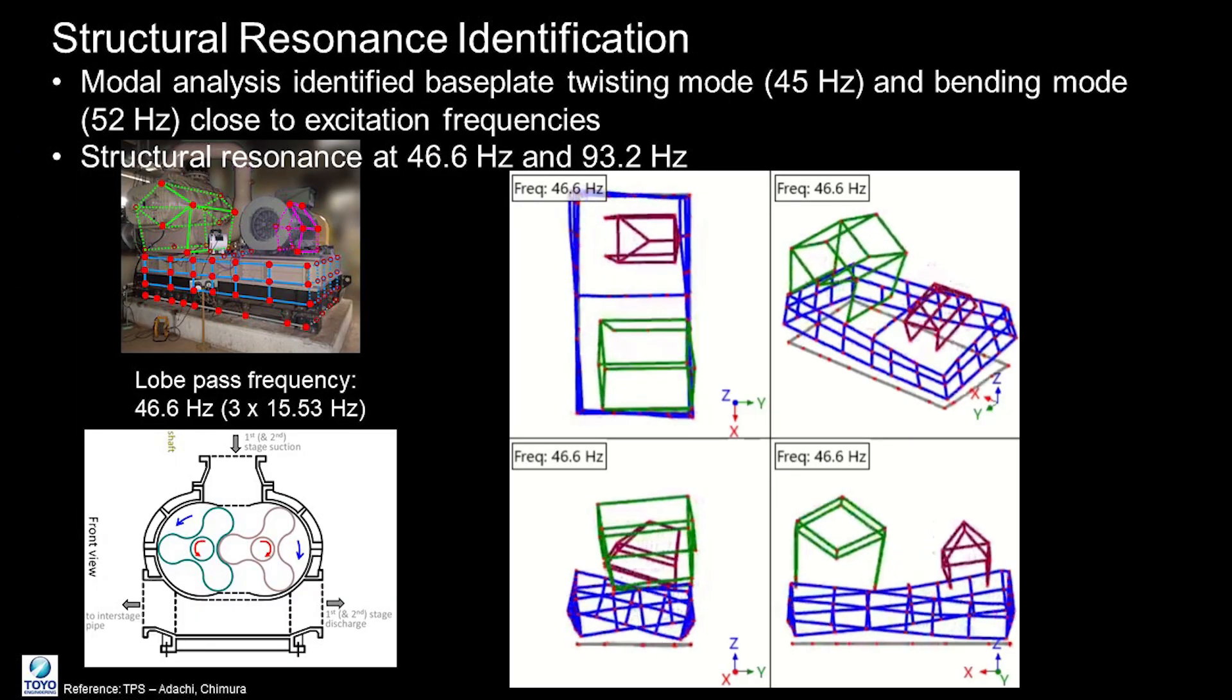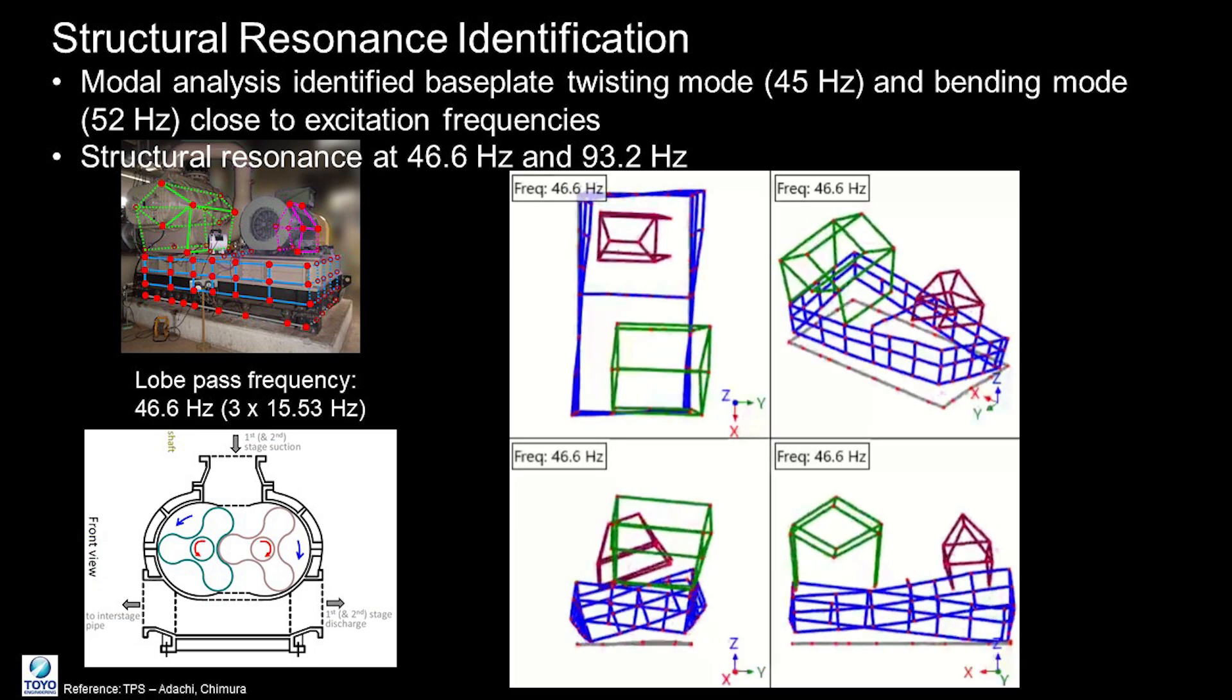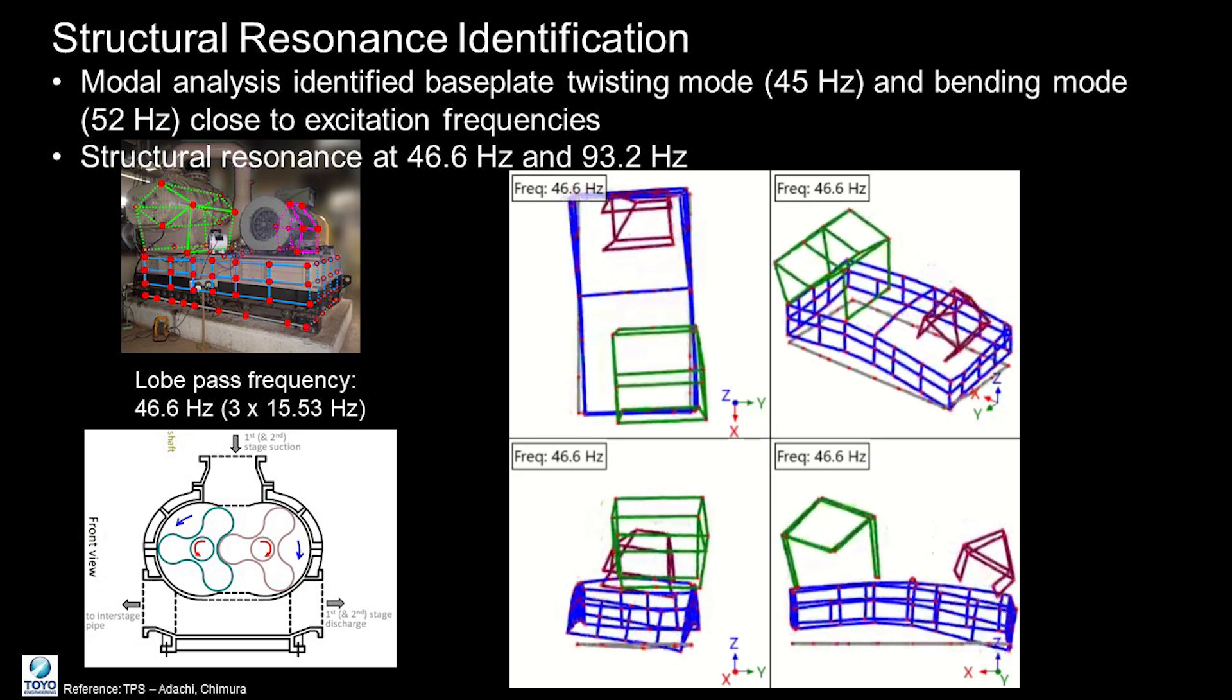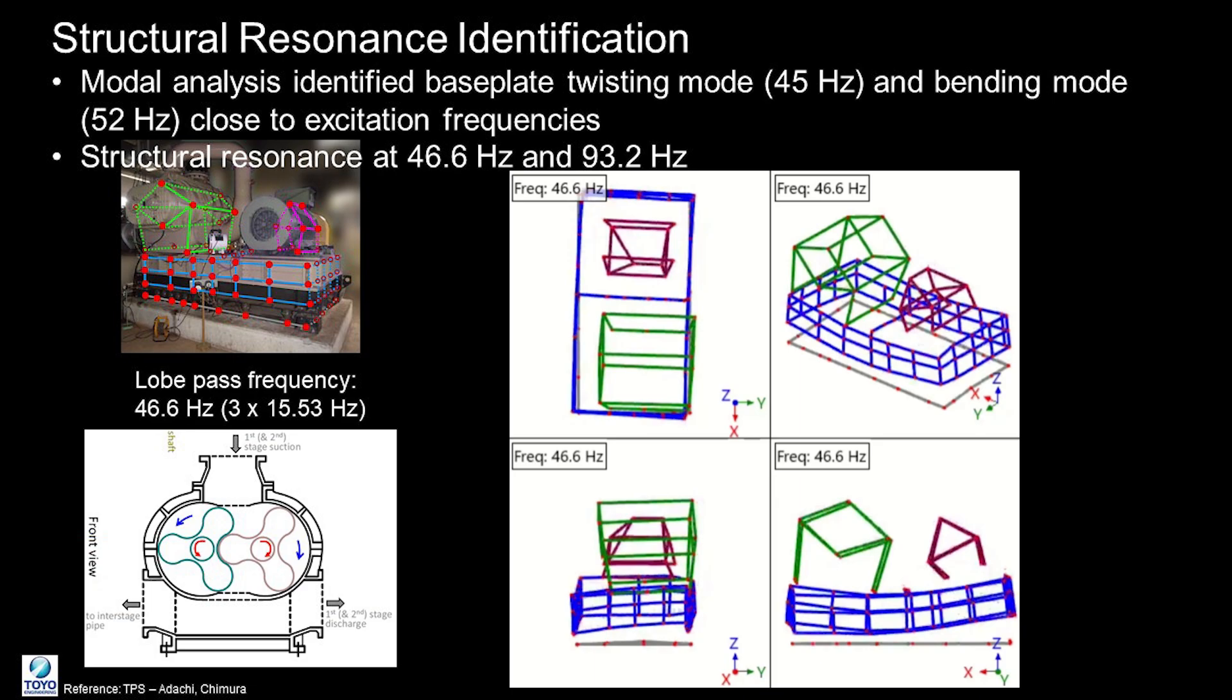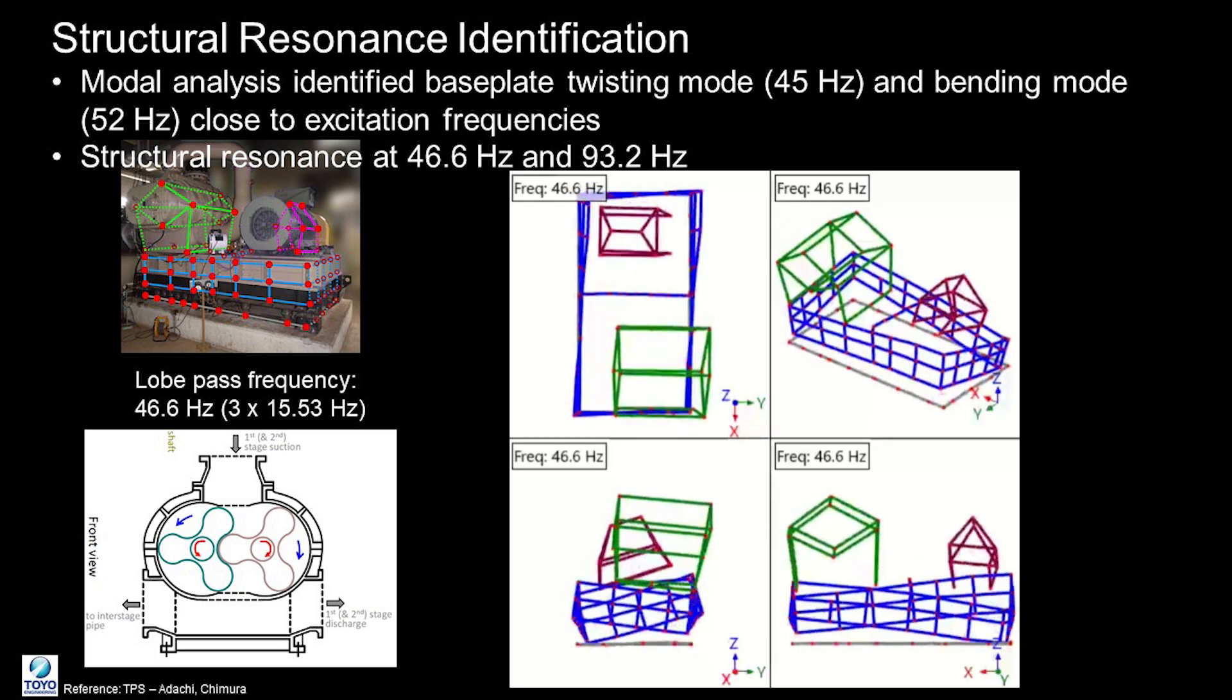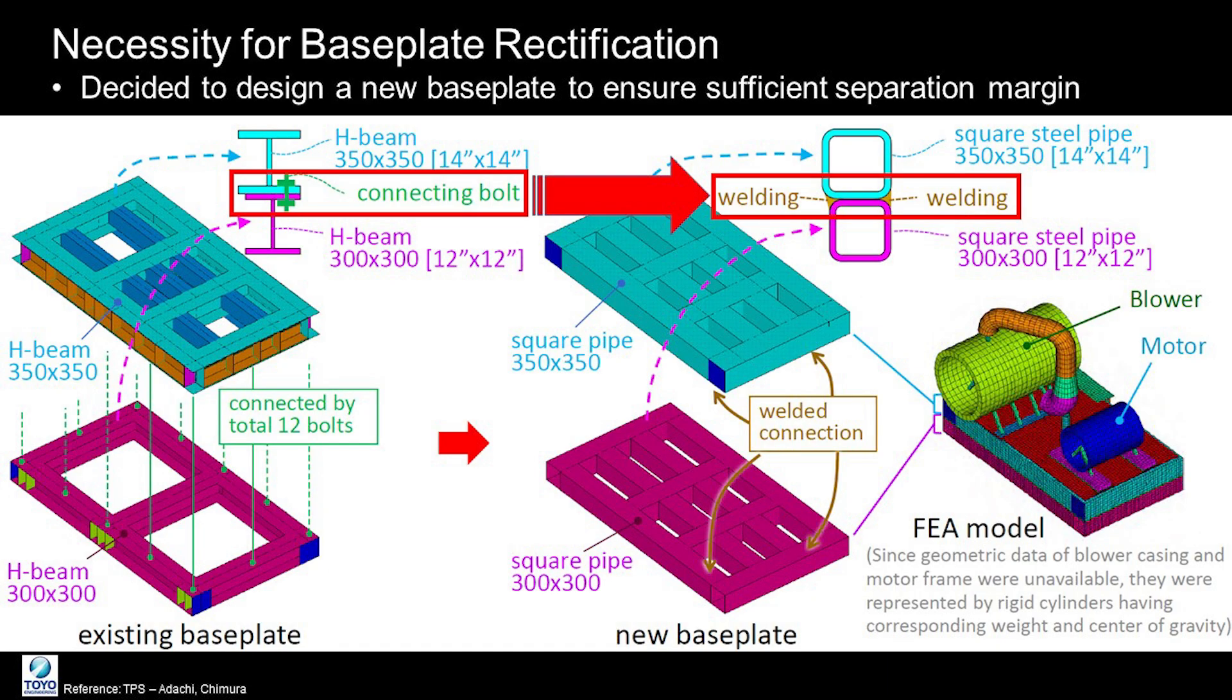Through experimental modal analysis, the structural natural frequencies were identified, and they were dangerously close to the excitation frequencies. For example, the base plate twisting mode at 45 Hz was only 3.4% away from the lobe passing frequency of 46 Hz, and the bending mode was also close. Given these findings, it was determined that the base plate needed rectification to avoid resonance.